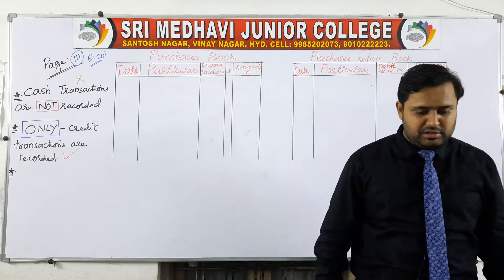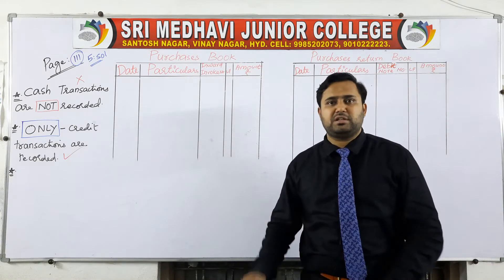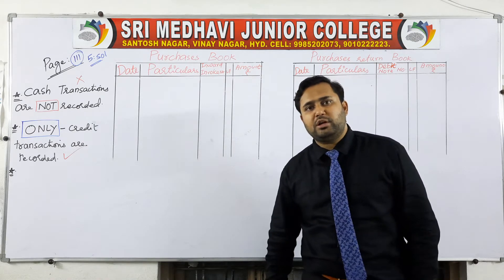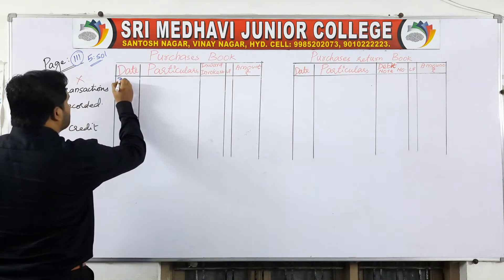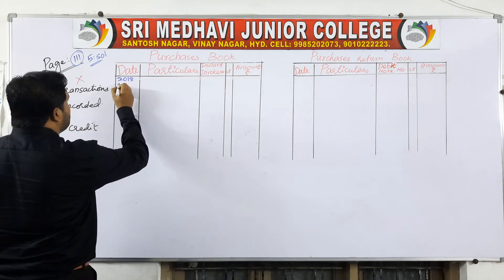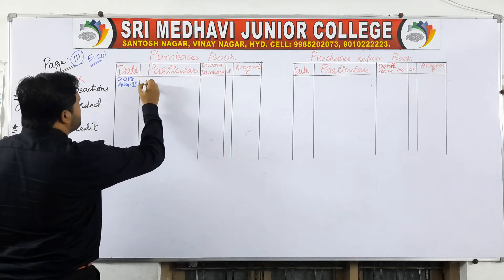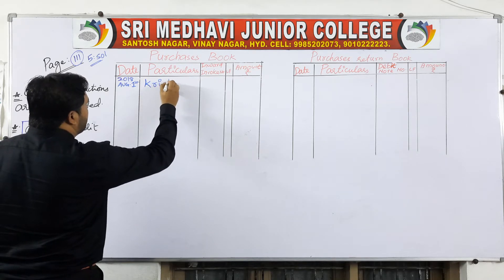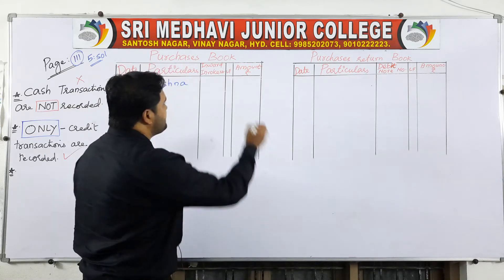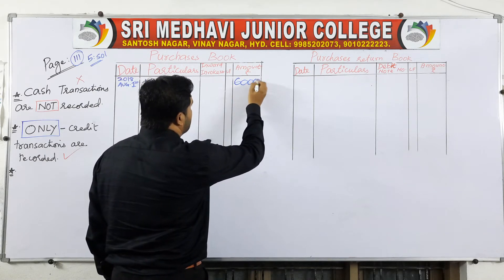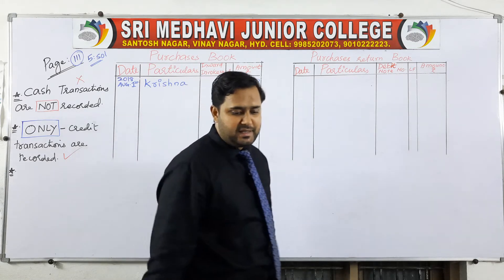The first transaction: 2018, 1st August — purchase goods from Krishna for 6,000 rupees. Since this is a purchase, you record it in the purchase book. Write the date 1st August 2018, the party name Krishna, and the amount 6,000 rupees in the amount column of the purchase book.